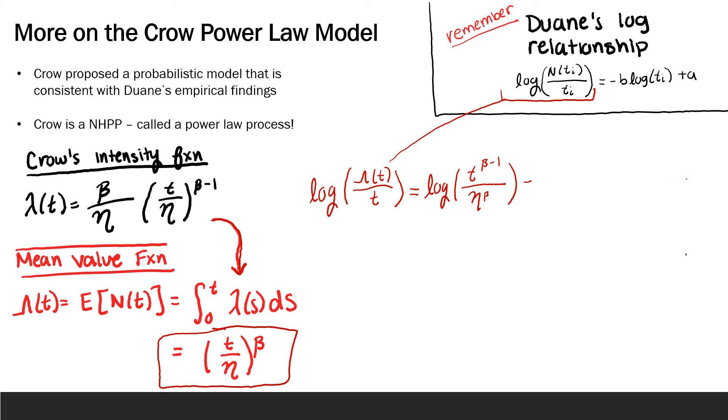Now, using logarithmic rules, we get (β-1) log(t) - β log(η). And we can see that this linear relationship holds through this piece being related to this piece and a being related to this piece.